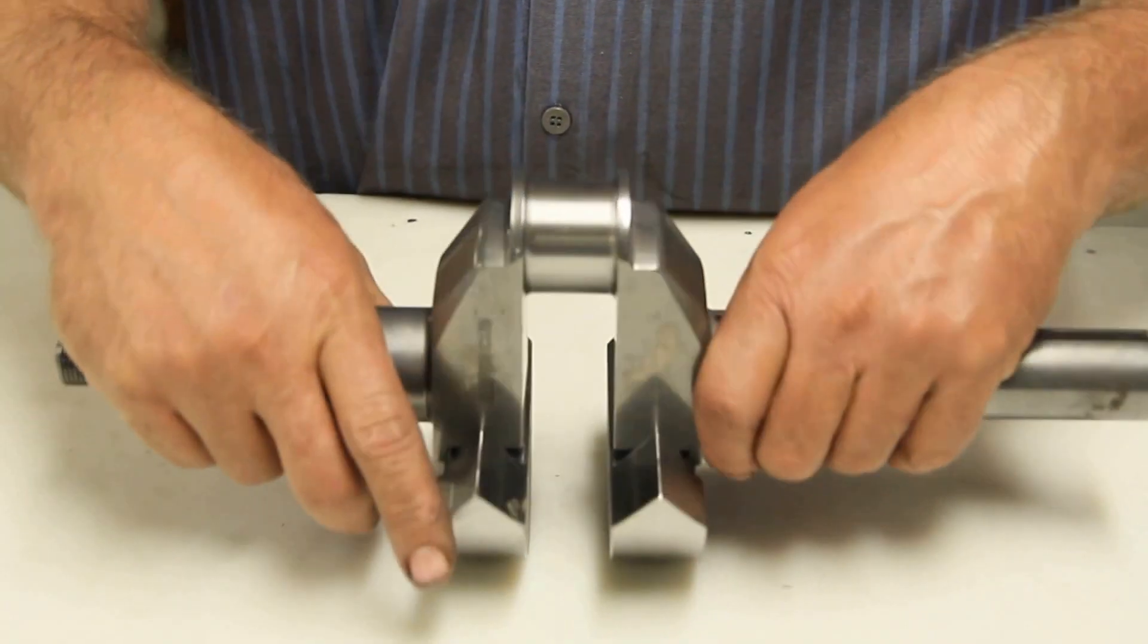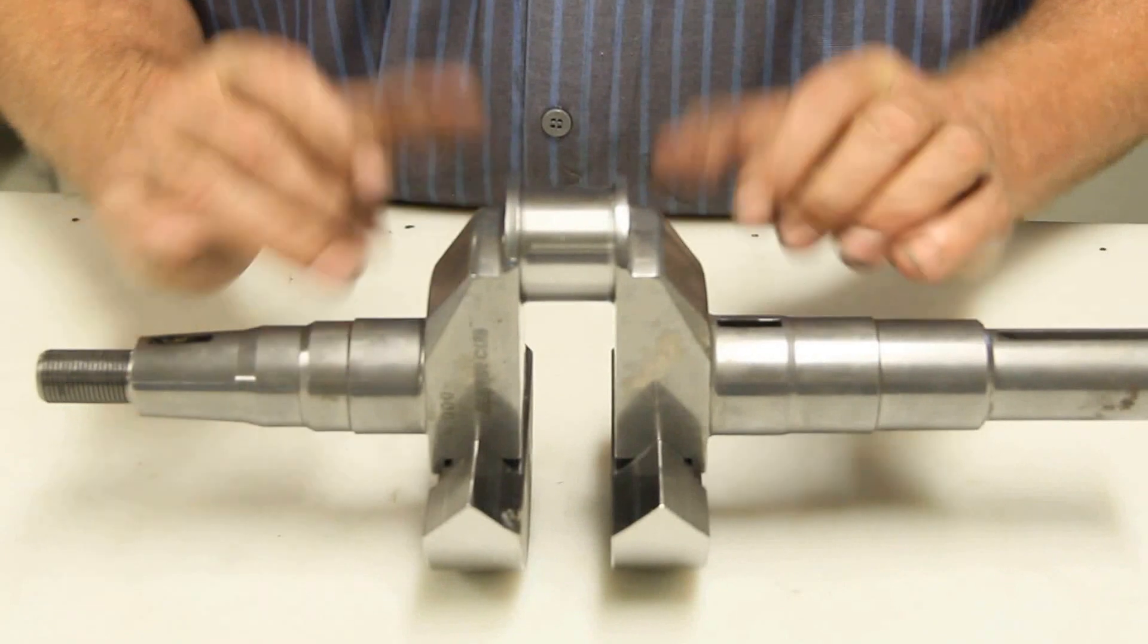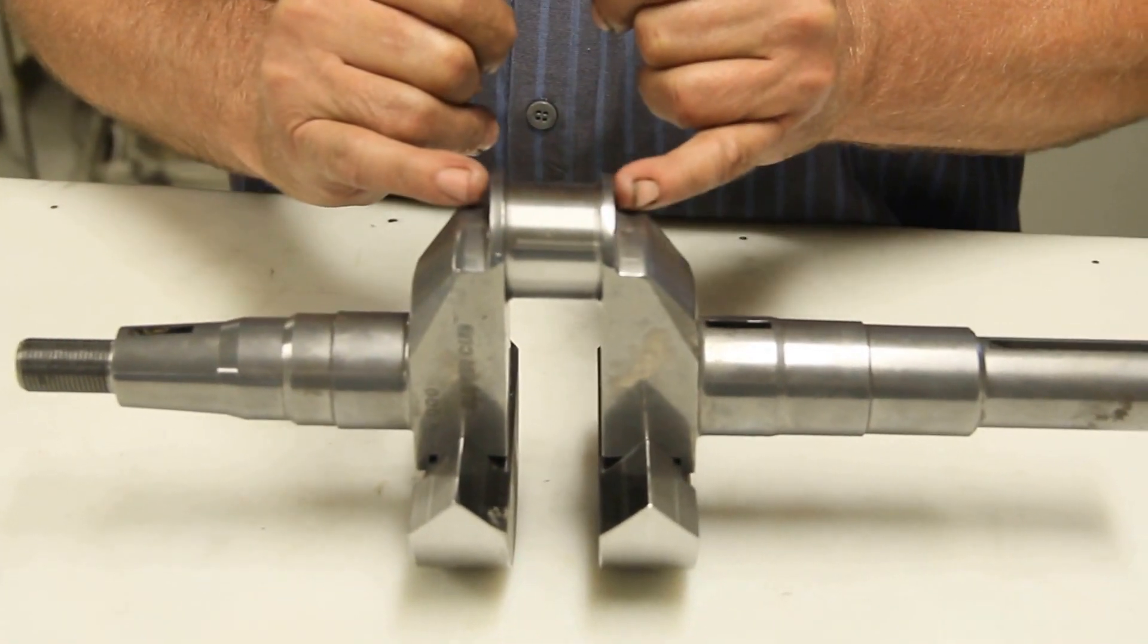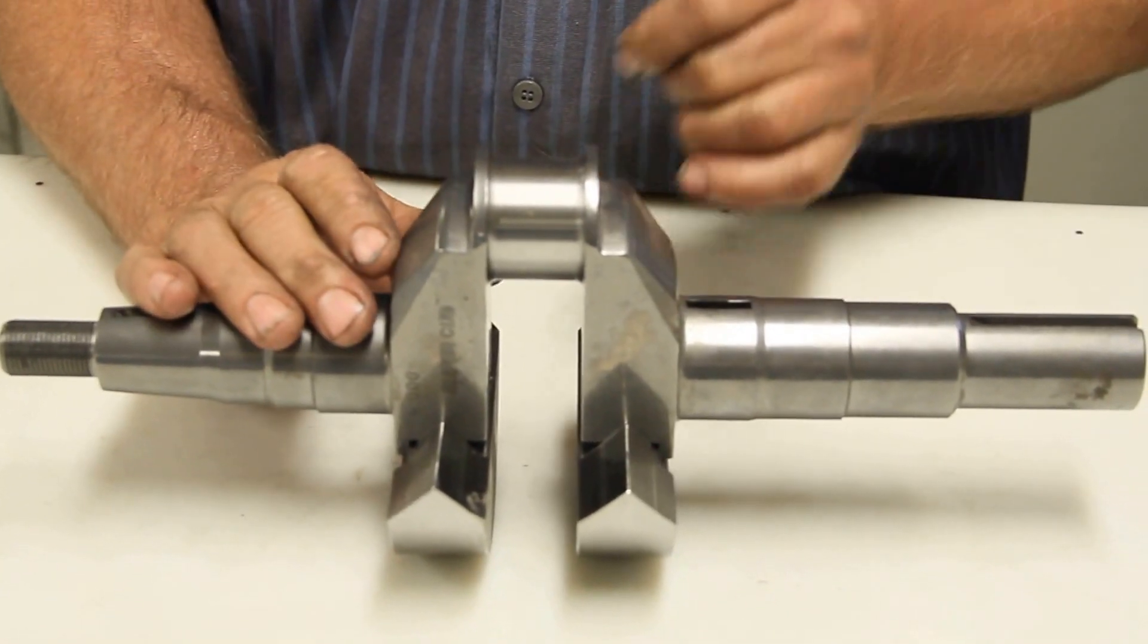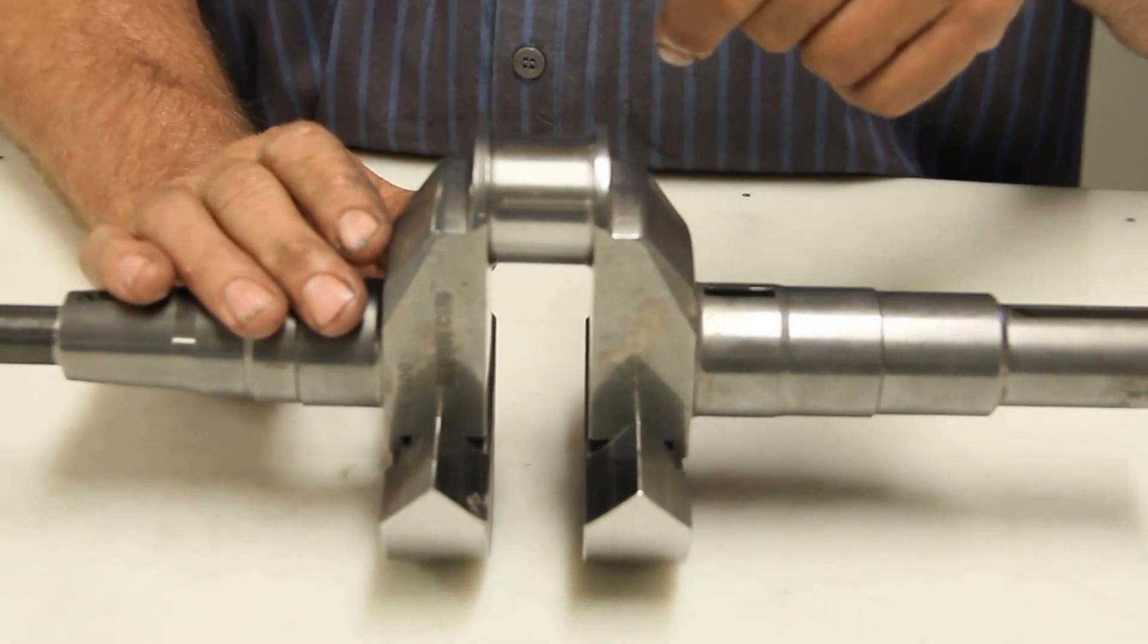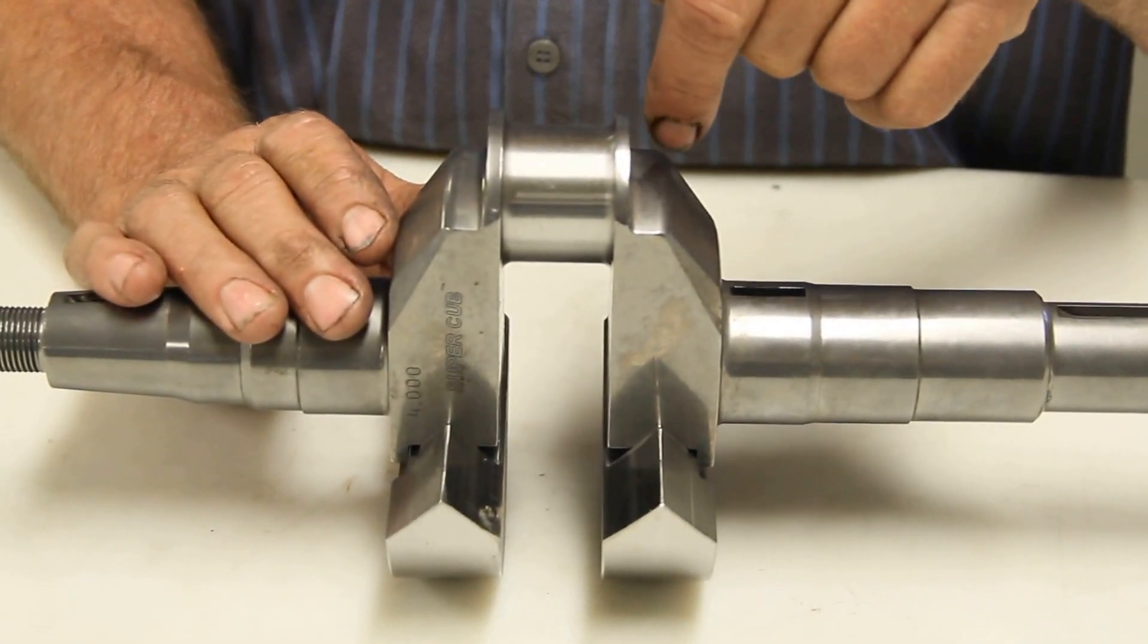When you get this in here, like this is a four inch stroke crank, and the reason why we have this cut down here, especially on this side, the higher lift camshafts, that cam lobe is right by this crankshaft here.